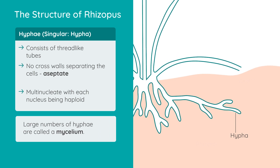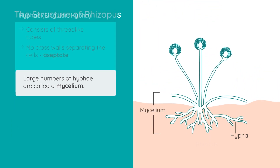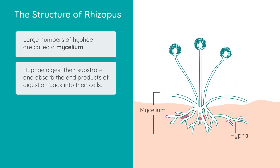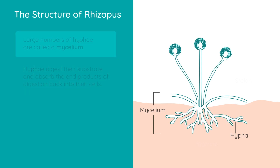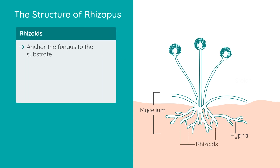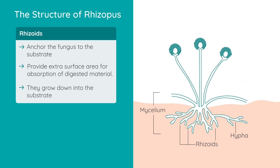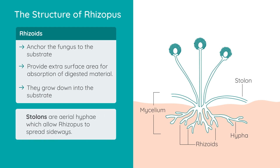Large numbers of hyphae form a mycelium. The hyphae digest the substrate on which they grow by secreting enzymes onto it, and they then absorb the products of digestion back into the cells. Rhizoids anchor the fungus to the substrate and provide extra surface area for absorption of the digested material — they grow down into the substrate, in this case the bread. Stolons are aerial hyphae which allow Rhizopus to spread sideways or laterally.